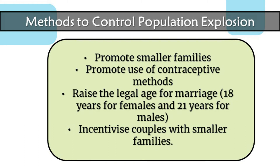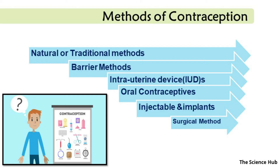Methods to control population explosion include: promoting smaller families, promoting use of contraceptive methods — techniques that prevent pregnancy — raising the legal age for marriage (18 years for females and 21 years for males), and incentivizing couples with smaller families. Types of contraception include: natural/traditional methods, barrier methods, intrauterine devices (IUDs), oral contraceptives, injectable and implants, and surgical methods.